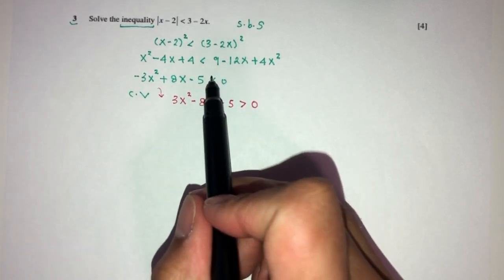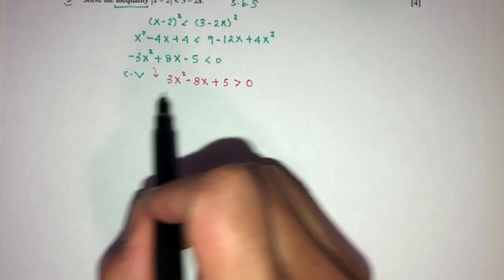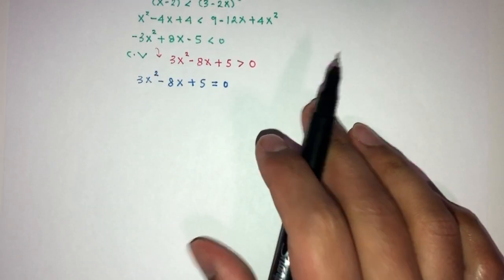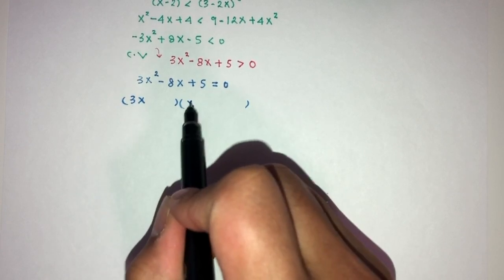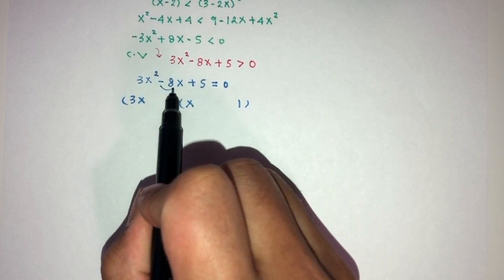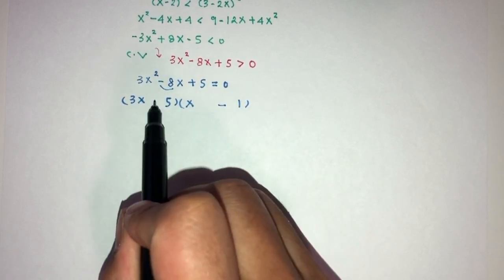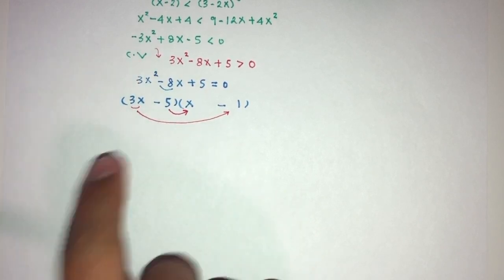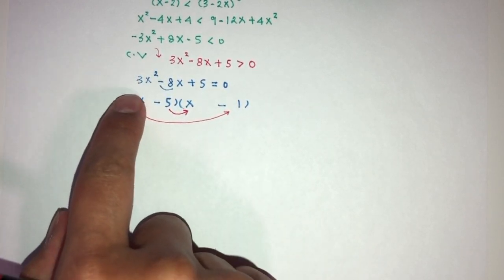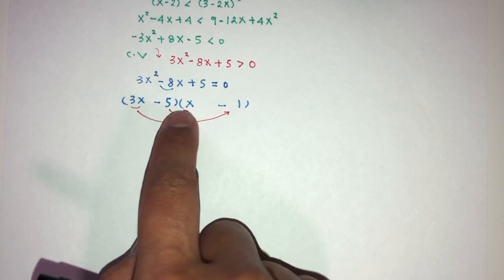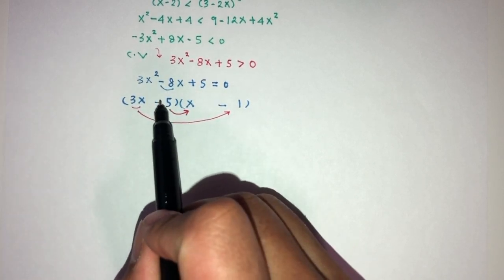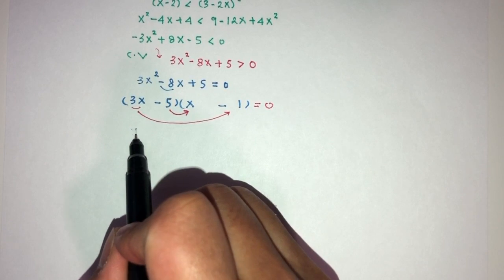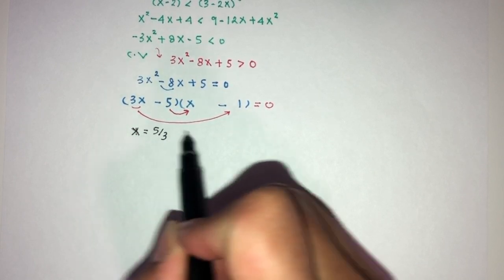To find the critical values, set 3x² − 8x + 5 = 0 and factorise. We get (3x − 5)(x − 1) = 0. Checking: 3x · (−1) = −3x and (−5)(x) = −5x; adding gives −8x, which matches. So the critical values are x = 5/3 and x = 1.